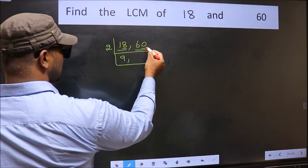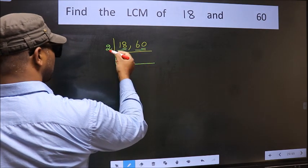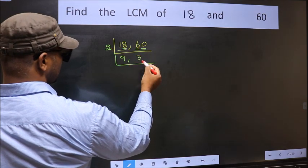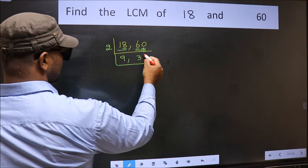The other number, 60, last digit 0, so this is divisible by 2. First number 6. When do we get 6 in the 2 table? 2 threes, 6. This 0 as it is down.